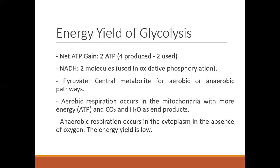What is the energy yield of glycolysis? The net ATP gain is 2 ATP, because 2 molecules of ATP have been used up in the energy investment phase. If we subtract that two from the four produced in the energy payoff phase, we have a net gain of 2 molecules of ATP. Two molecules of NADH are also produced. Pyruvate is produced as a central metabolite for both aerobic and anaerobic respiration.